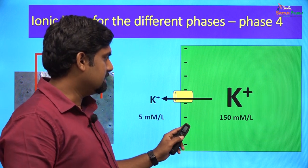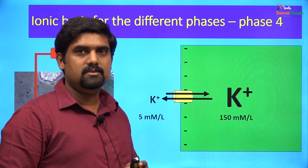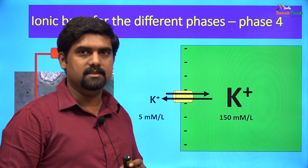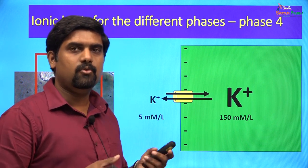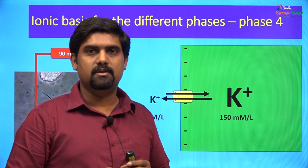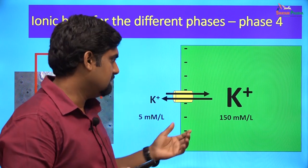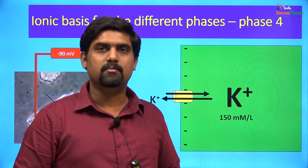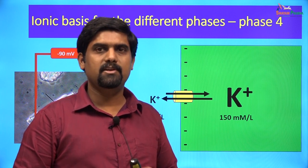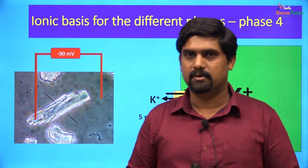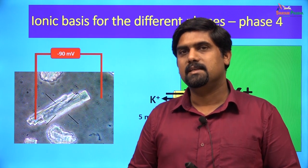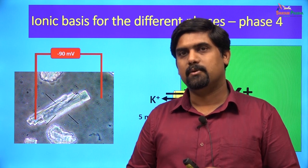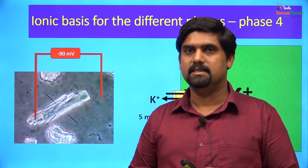This negative membrane potential starts attracting potassium from outside to inside. There is a concentration gradient from inside to outside and an electrical gradient from outside to inside. Finally, these forces balance and there is no net movement of potassium ions. At this stage the membrane potential reaches about minus 90 millivolts, which is the equilibrium potential for potassium. The resting membrane potential of these cells is close to the equilibrium potential for potassium, meaning the RMP is determined by the high potassium permeability of these cells.